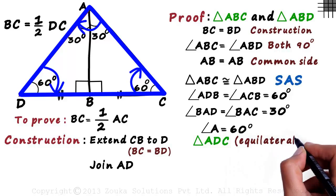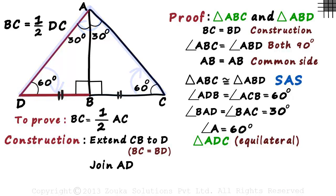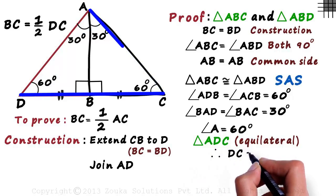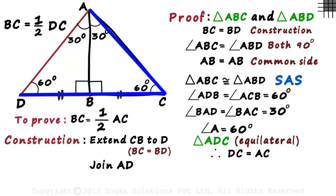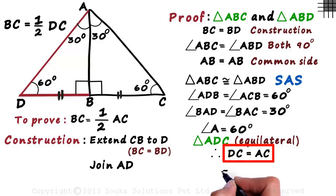All sides of an equilateral triangle are equal to each other. Therefore, DC will be equal to AC. We got what we were looking for. As B is the midpoint of segment DC, DC will be equal to twice BC. This equation can be written as 2 times BC equals AC. Transposing 2 to the other side, we get BC equals half AC.